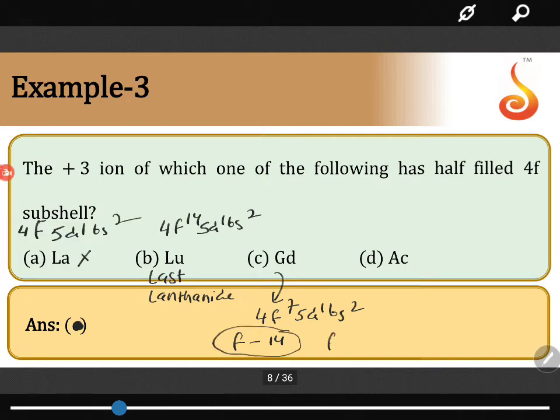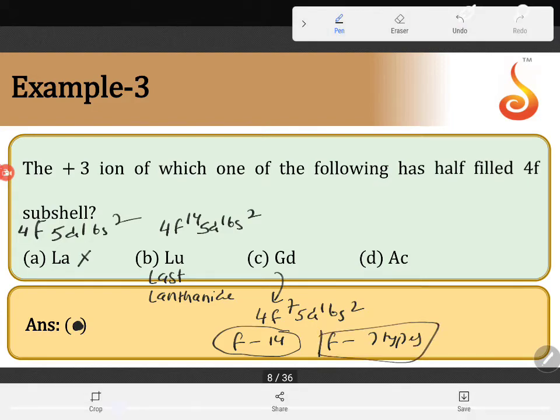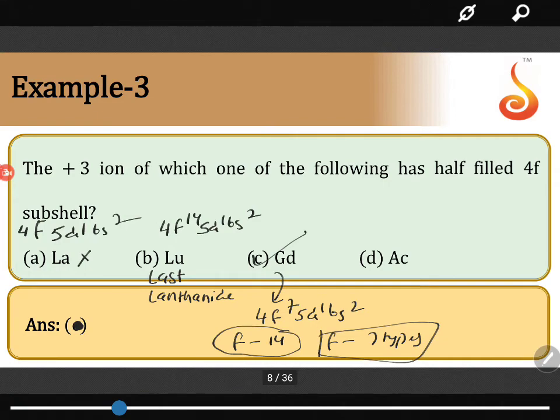because F orbitals are 7 types, 7 into 14 electrons. So therefore half filled is 4F7, therefore gadolinium is undisputedly the answer.